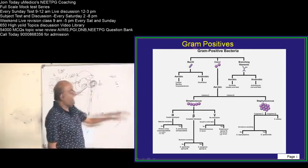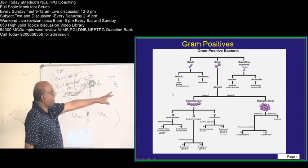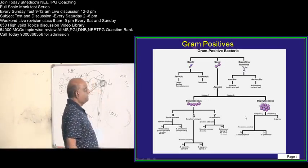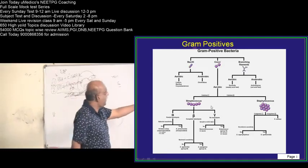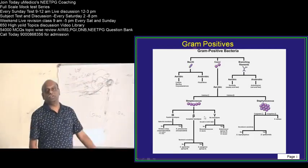Gram positive cocci among the aerobic, you divide them, whether they are catalase positive or catalase negative. Based on that, you will decide, whether it is staphylococcus or streptococcus.